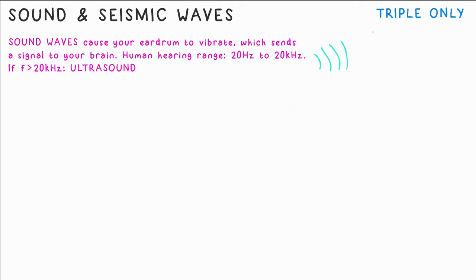Just for triple, sound waves cause the eardrum to vibrate, which in turn is converted into a signal that travels to your brain. The human ear can hear frequencies between 20 hertz and 20 kilohertz, 20,000 hertz. Any frequency above this is called ultrasound.